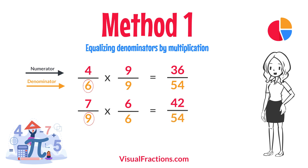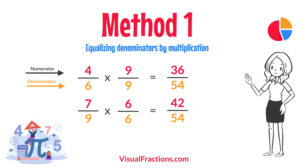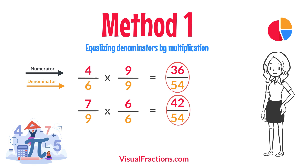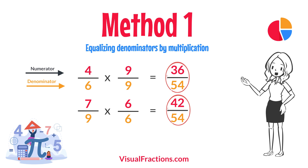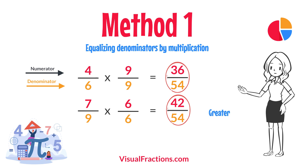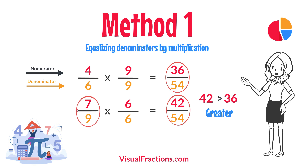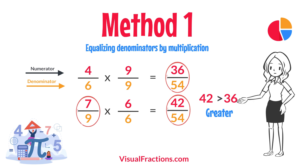This results in 42 54ths. Now, with both fractions expressed with a denominator of 54, we can easily compare them. Comparing these, 42 54ths is greater than 36 54ths, so 7 ninths is the larger fraction.